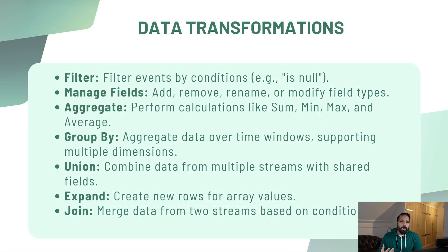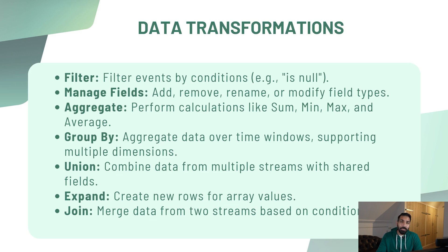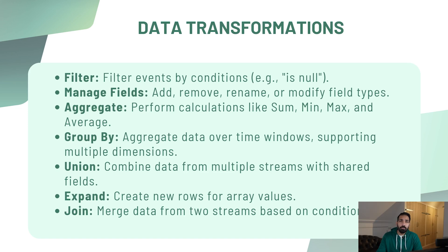What kinds of transformations can you do on real-time data? You can filter data, add or remove certain fields, aggregate data, and group by events over certain time windows. You can also split into multiple dimensions, perform union operations to combine data from multiple streams with shared fields, create new rows for array values, and join or merge data from two streams based on certain conditions.